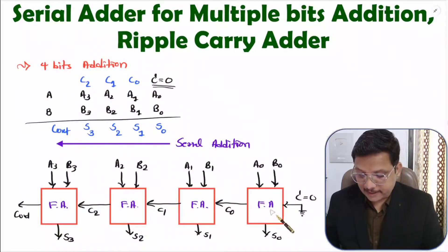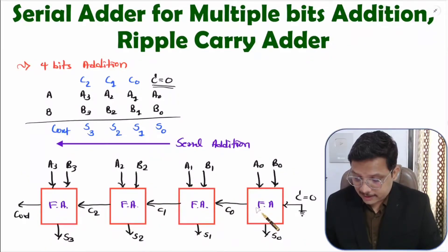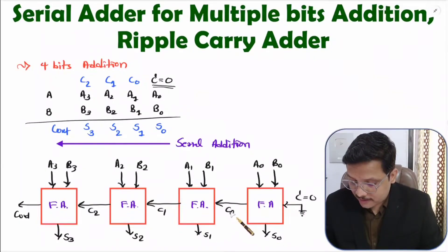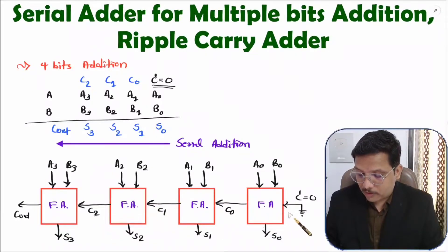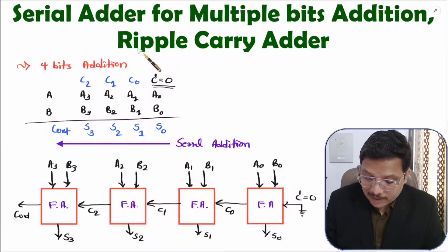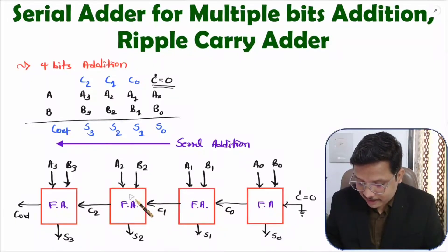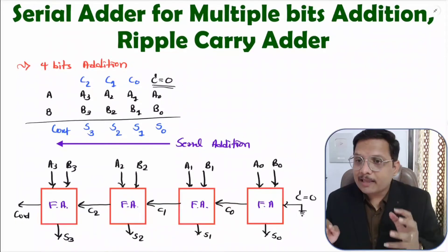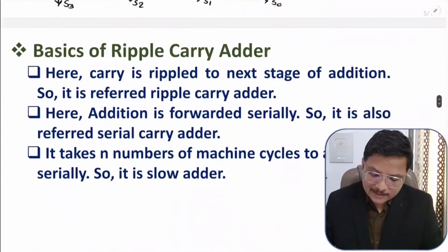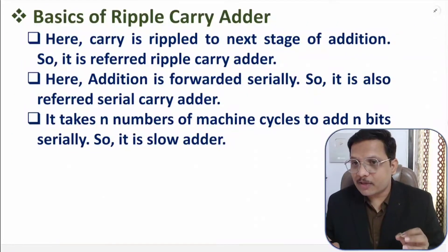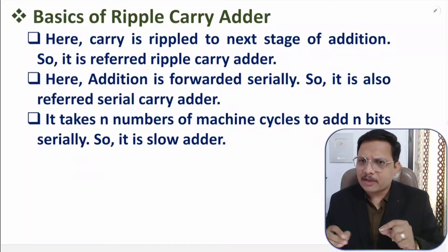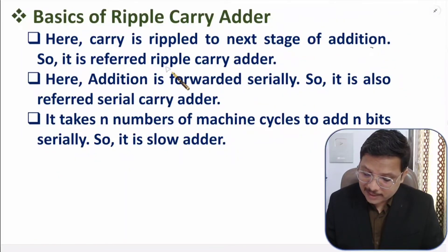That is how the complete circuit is formed. This is referred as serial adder because output S1 happens only when you have C0, S2 happens only when you have C1, and S3 happens only when you have C2 — the carry is getting generated serially. It is also referred as ripple carry adder because the carry of one full adder is getting rippled to the input of the next full adder. That is why it is called ripple carry adder. Addition is forwarded serially, so it is also referred as serial carry adder.